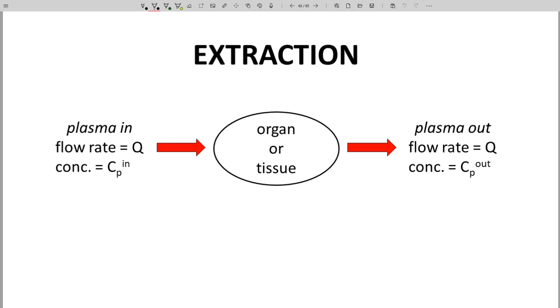How is a drug scrubbed from the plasma? Where does it go? Clearance occurs as blood flows through an organ or tissue.